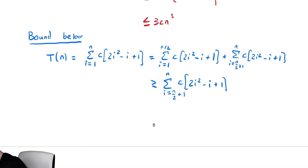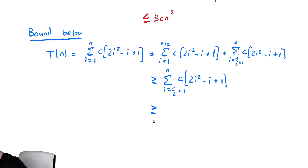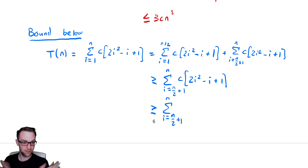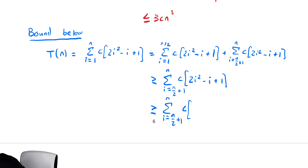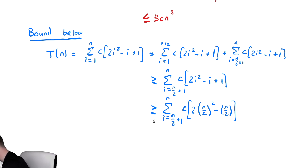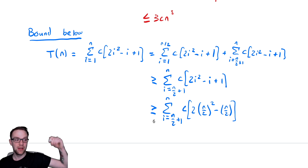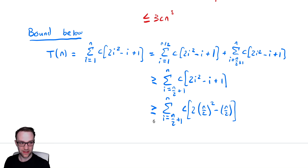So we have the sum from i equals n/2 plus one to n of c times 2i² minus i plus one. Now we need to plug in a value for i, so we're going to replace every term with the smallest that remains. Going forward, why not simply replace them with n/2, which is even smaller than n/2 plus one, and that'll simplify our lives a little bit. So we have c times 2 times (n/2)² minus n/2. And then we have a positive one — we can drop that, since when bounding below we can always drop positive values.